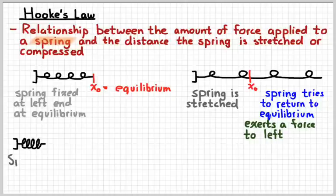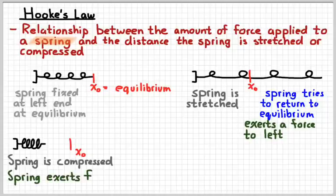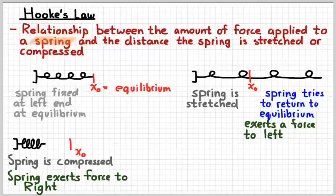Springs can also be compressed or squeezed. So if you've ever had like a spring-loaded dart gun, you basically make the dart fire by releasing a compressed spring. And so when it's compressed, then it's on the left side of equilibrium. And that means that the spring is going to exert a force directed to the right. It's going to try to relax and return to its equilibrium position.